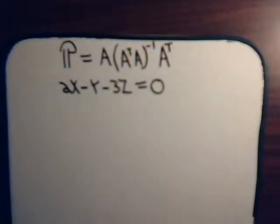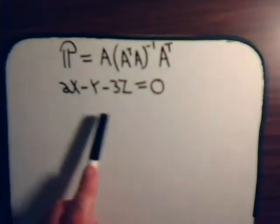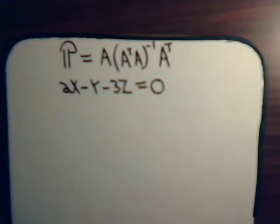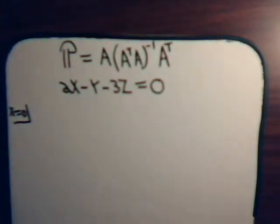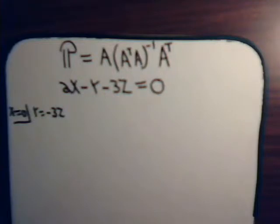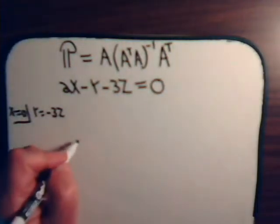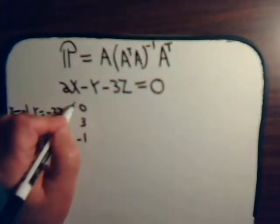The plane contains the zero vector, so it is a genuine subspace. That plane, or subspace, will be spanned by any two independent — specifically any non-parallel — vectors in the plane. To find them, let's say the X component is zero. Then we would have Y equals minus 3Z. Let Z equal minus 1, then Y would have to equal 3, and X is zero. So this vector is in the plane.